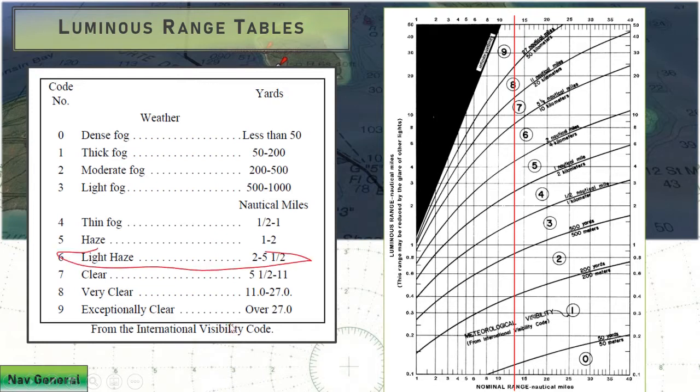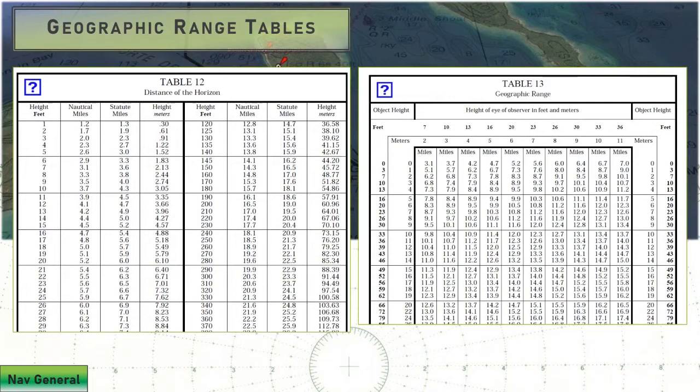Let's say we have a visible condition that is light haze, condition six. I'm going to draw in two lines to indicate the entire range of possible values. On a Coast Guard exam, they're going to give you a specific number. You have to guesstimate, close best guess answer, and you'll have multiple choice answers. We can see that the entire distance covered in our code six, two to five and a half, gives us a net result of about four and a half to eight and a half. That's luminous range.